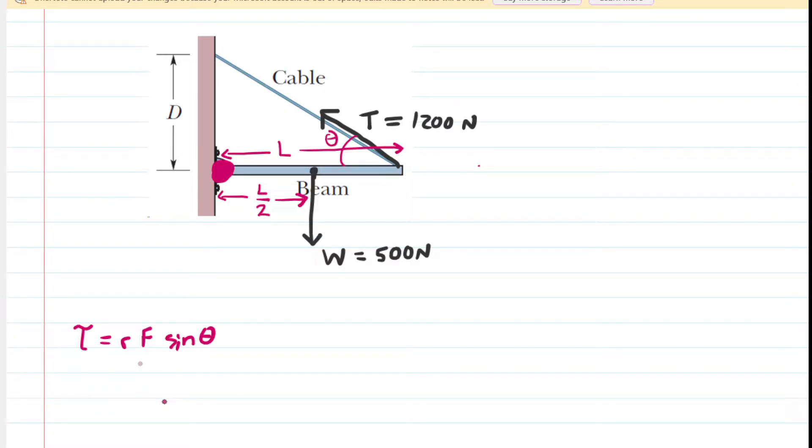So we would take the tension force T, and we're going to multiply that by the sine of the angle, which we do not know yet. And then we're going to multiply by R. Now R is a particular distance, and it's basically the distance from where the tension is acting to the pivot point. So if you look at where the tension is acting all the way over to the pivot point, that distance would be L. So altogether it's going to be L times T times the sine of theta.